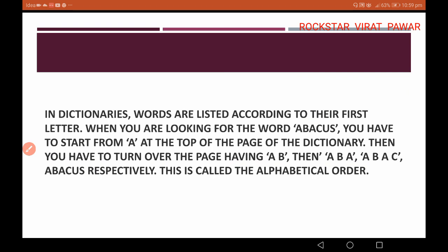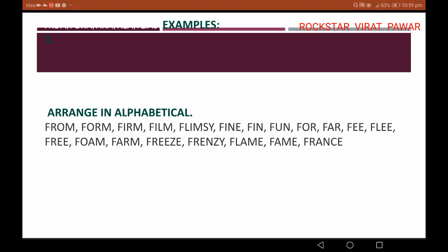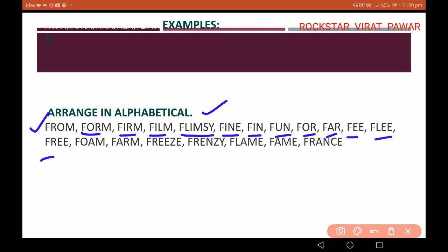So when you start an alphabetical order question, this question is: arrange in alphabetical order. See here, the words are: from, form, film, flimsy, fine, fin, fun, for, fair, fee, flee, free, foam, farm, fritz, frenzy, flame, fame, France.